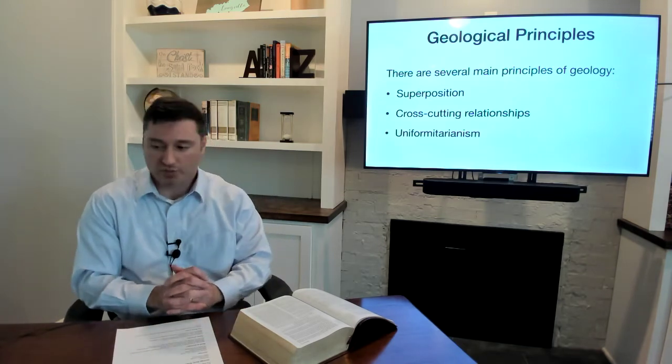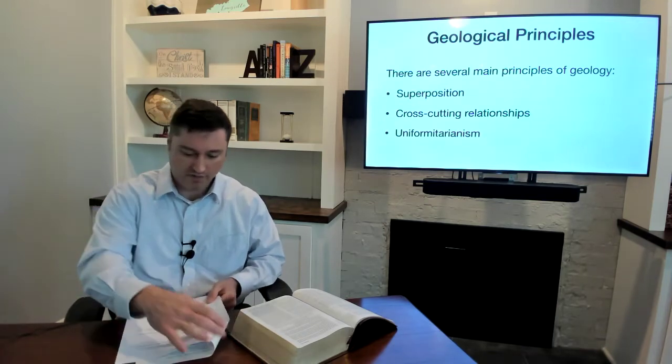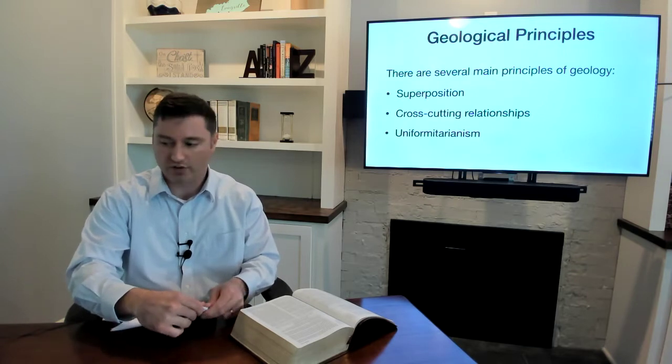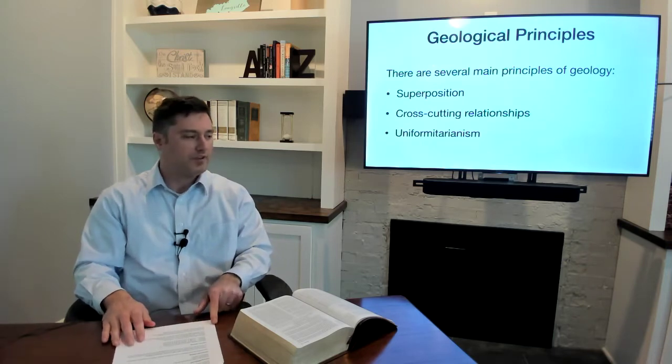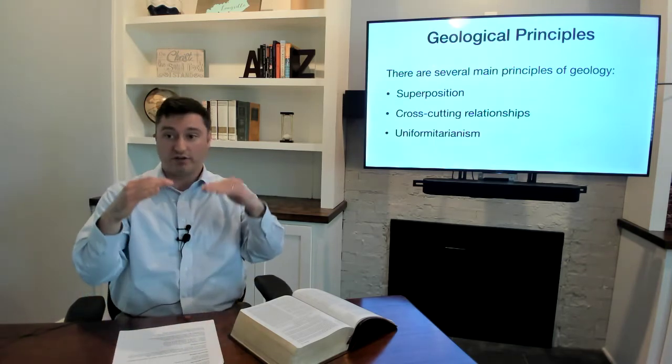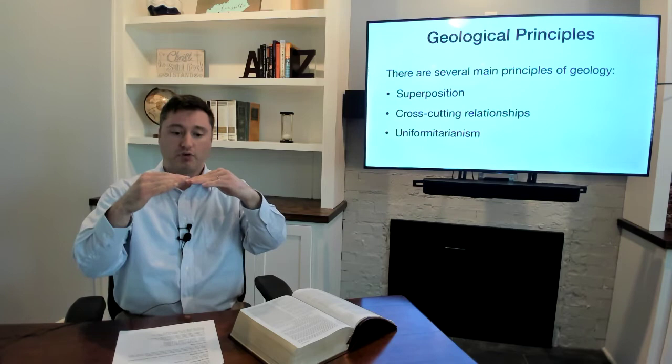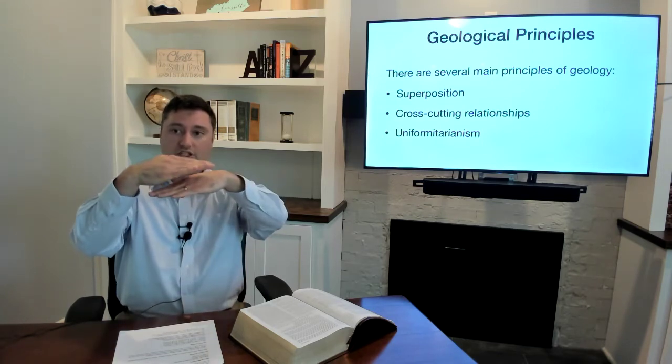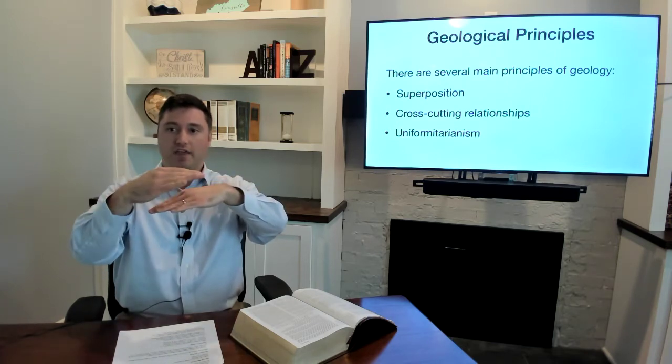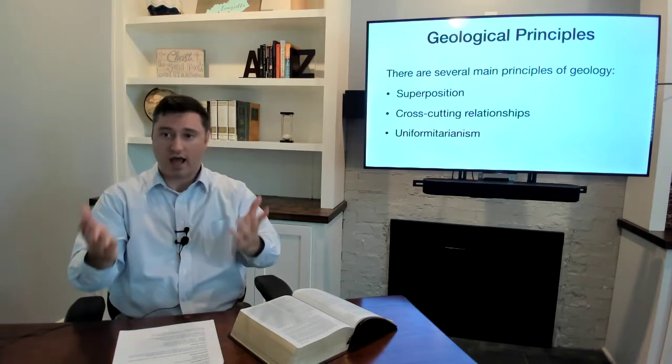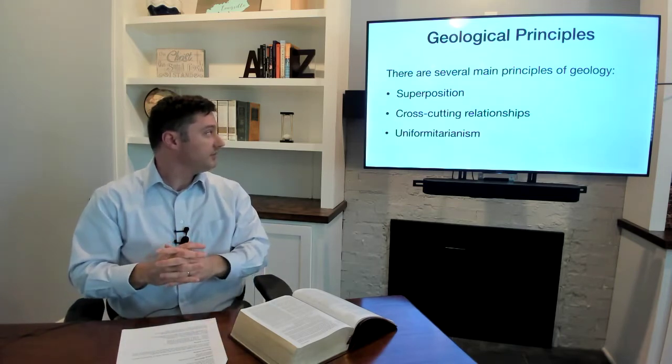Transitioning now to geological principles, there are several main principles of geology. Three of them are superposition, cross-cutting relationships, and uniformitarianism. So superposition says that if you're talking about rock layers that have not been disturbed by tectonic activity, so these are undisturbed rock layers, that if you have a rock layer above, that's a younger rock layer. If you have a rock layer below, that's an older rock layer. And I think that makes a good amount of sense, knowing what we know about how sedimentary rocks are formed and things like that. So superposition seems to make sense. It seems to tell us that, you know, as we go deeper and deeper, we're getting essentially older and older layers.